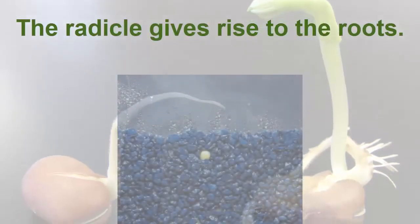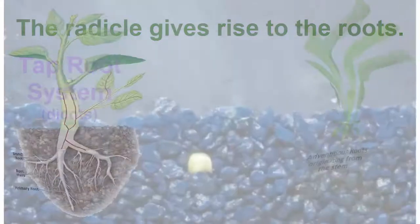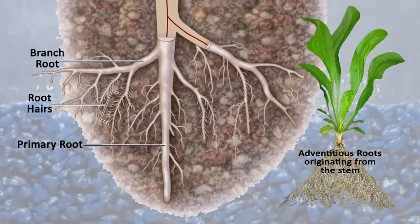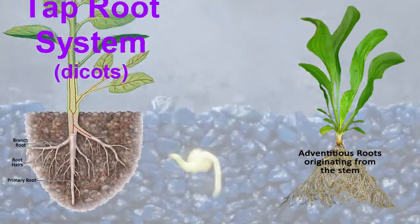Roots develop from the embryonic radicle in seeds. Dicots or plants having two cotyledons usually develop the taproot system where a single primary root gives rise to the smaller secondary roots.